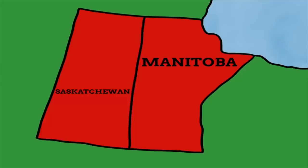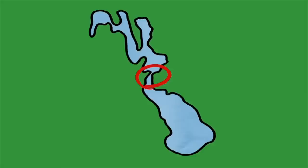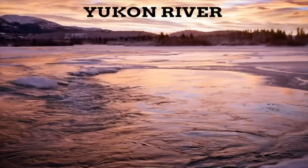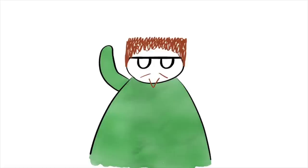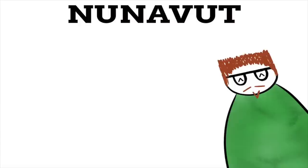Two province names come from the Cree language: Manitoba and Saskatchewan. Manitoba is named after Lake Manitoba — it's believed to come from the Cree term Man Intewapawa, meaning the Narrows of the Great Spirit, due to how it narrows in the centre. Saskatchewan is also Cree and named after a river, believed to mean a swift-flowing river. The Yukon Territory is named after the Yukon River, from the lower Tanana word Yukuna meaning big river. Nunavut, the most northern territory, comes from Inuit Inuktitut and means our land.